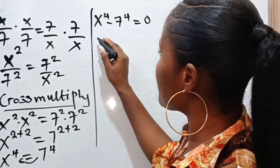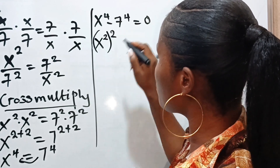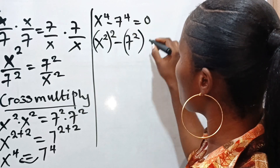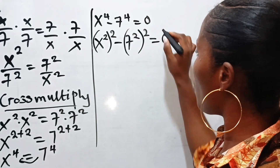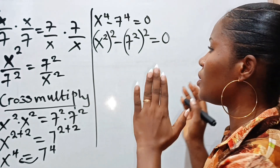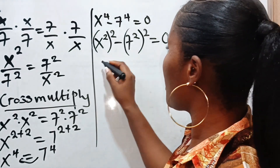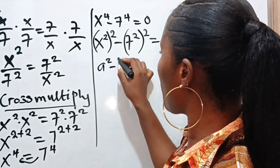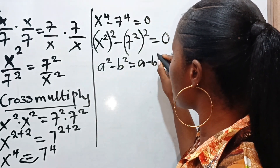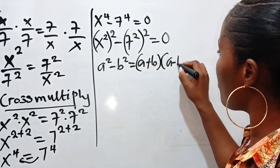Therefore, we can write this as x to the power of 2 raised to the power of 2, minus 7 to the power of 2 raised to the power of 2, is equal to 0. Now recall the algebra identity that states that a squared minus b squared is equal to a plus b multiplied by a minus b.